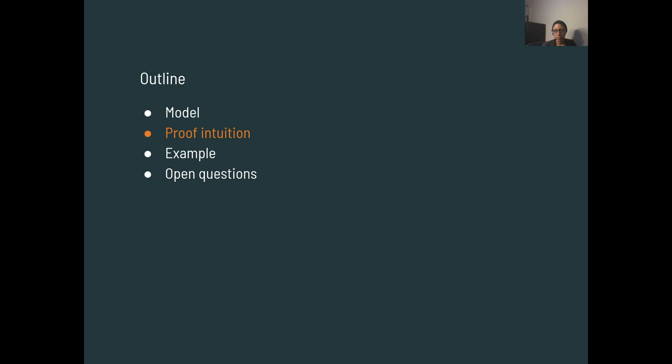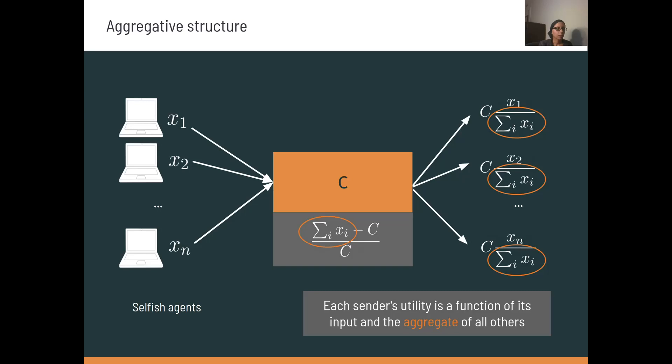Now I'll talk through some intuition for our proof before introducing the formal safety guarantee. Let's look back at the network game that we introduced previously. Here we can see that the throughput is only a function of the sender's input and the sum of all remaining inputs. And similarly, the delay is only a function of the total input.